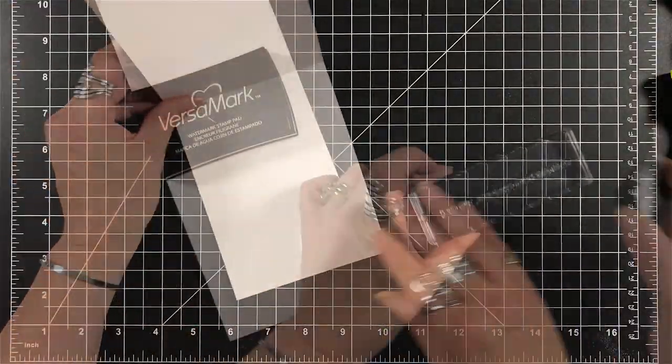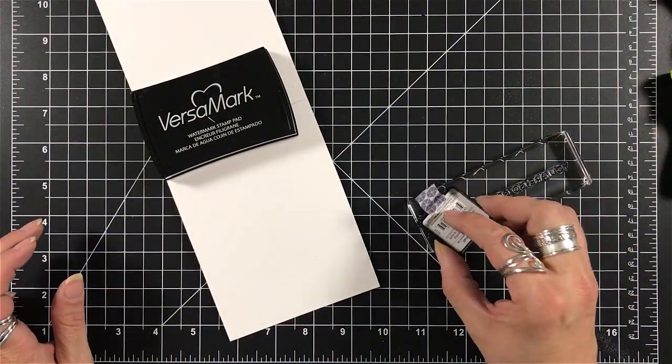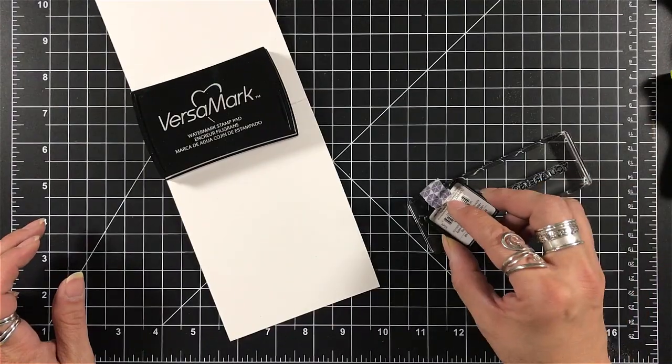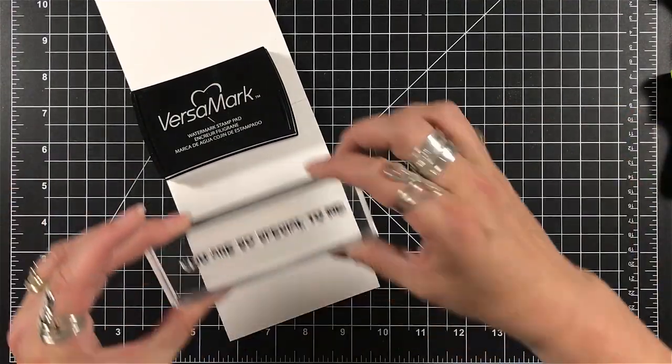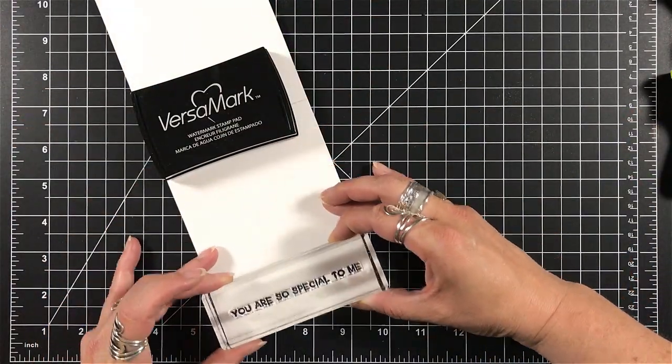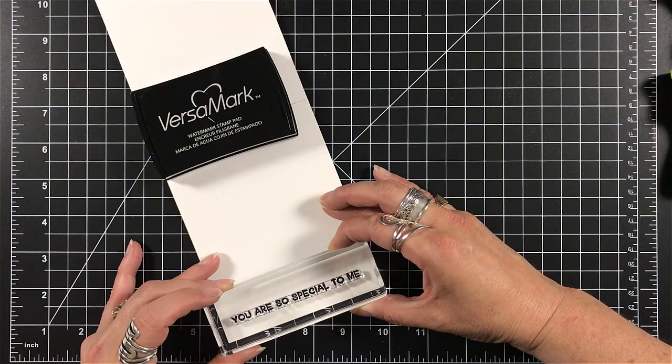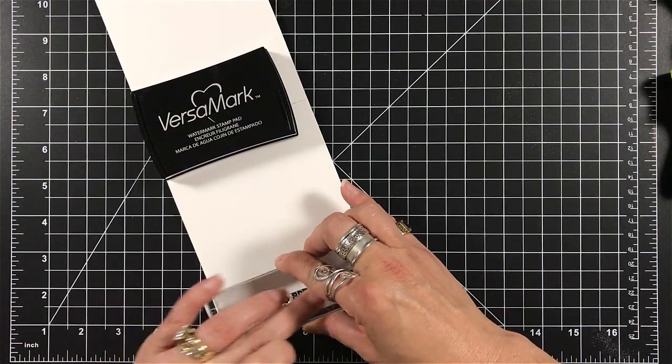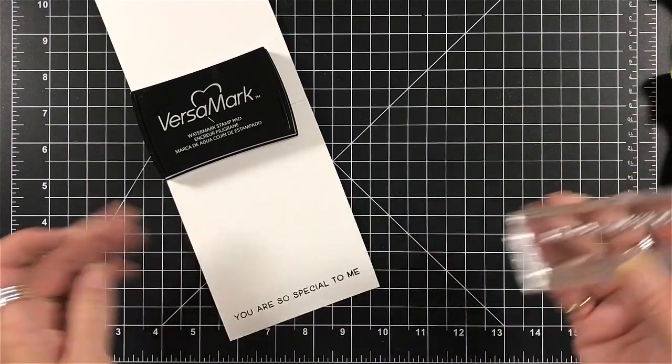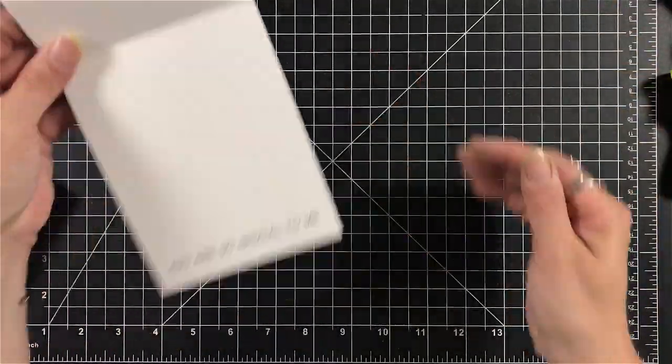So that is our card on the front. I'm going to take another sentiment. And I'm going to stamp it on the inside. And this says, you are so special to me. And I'm just going to stamp that down on the bottom. So this is a great encouragement card for someone who maybe needs a smile.